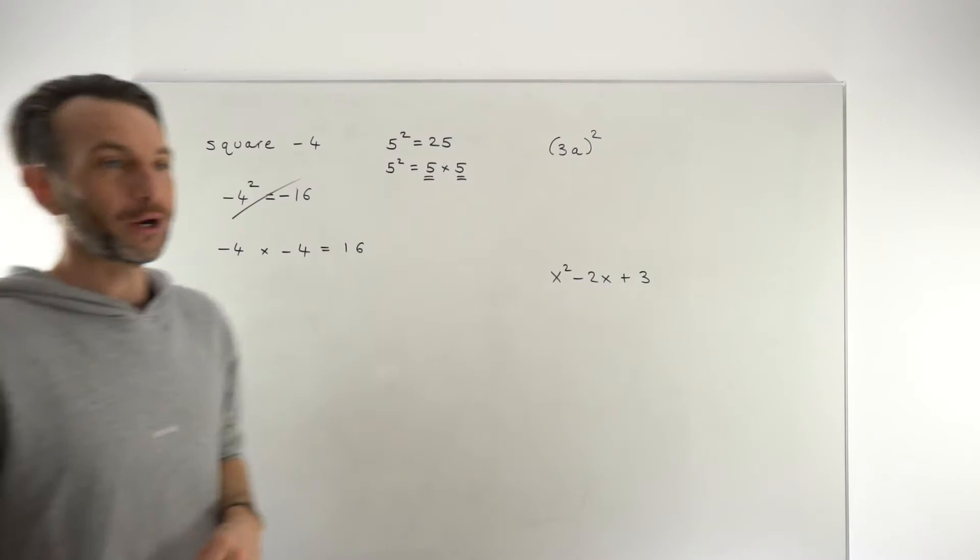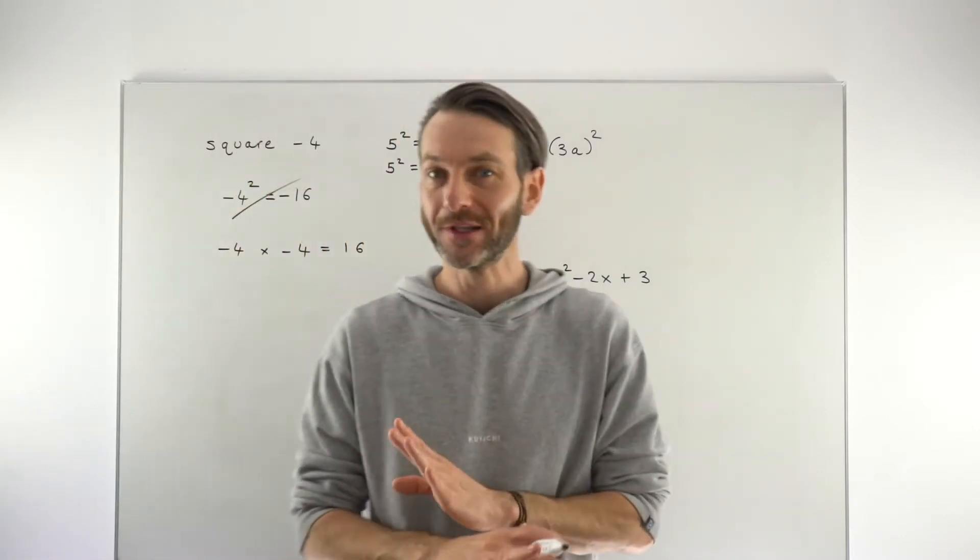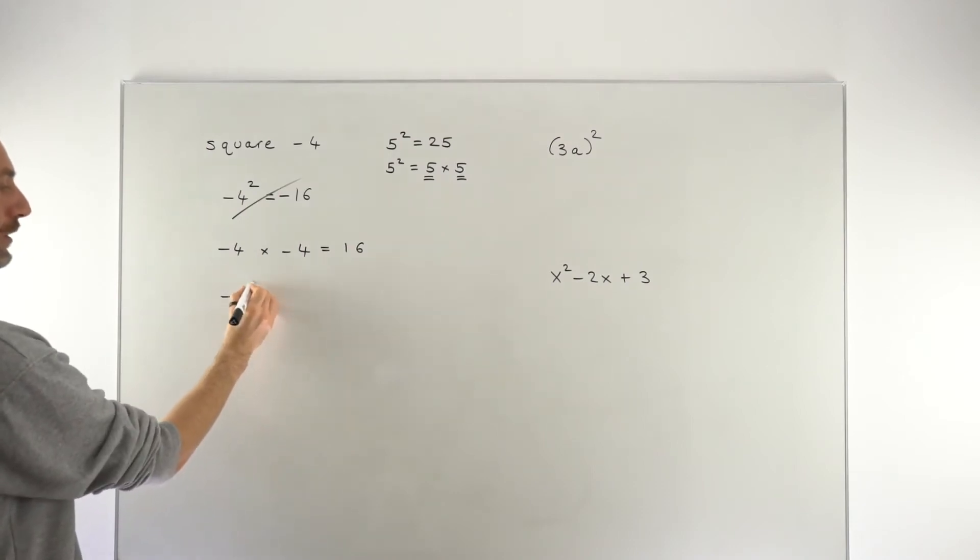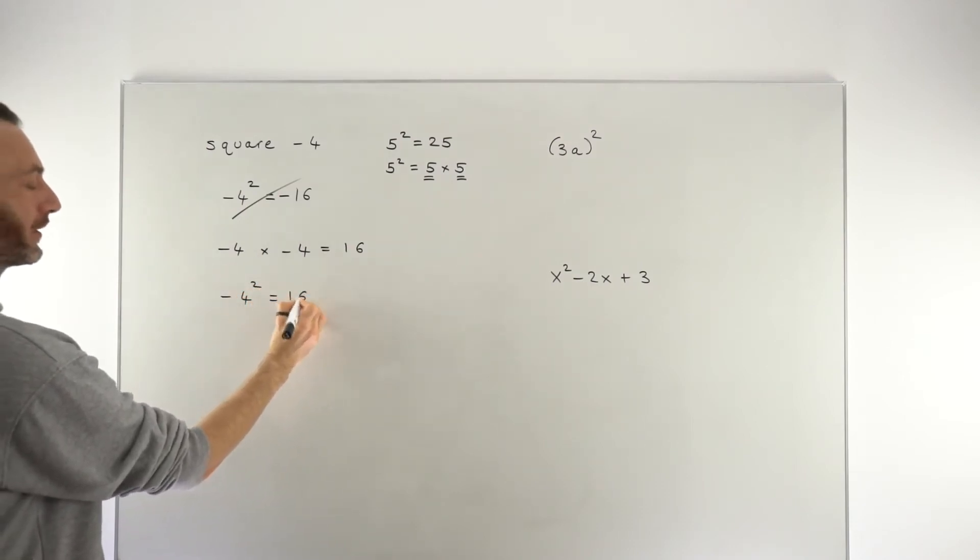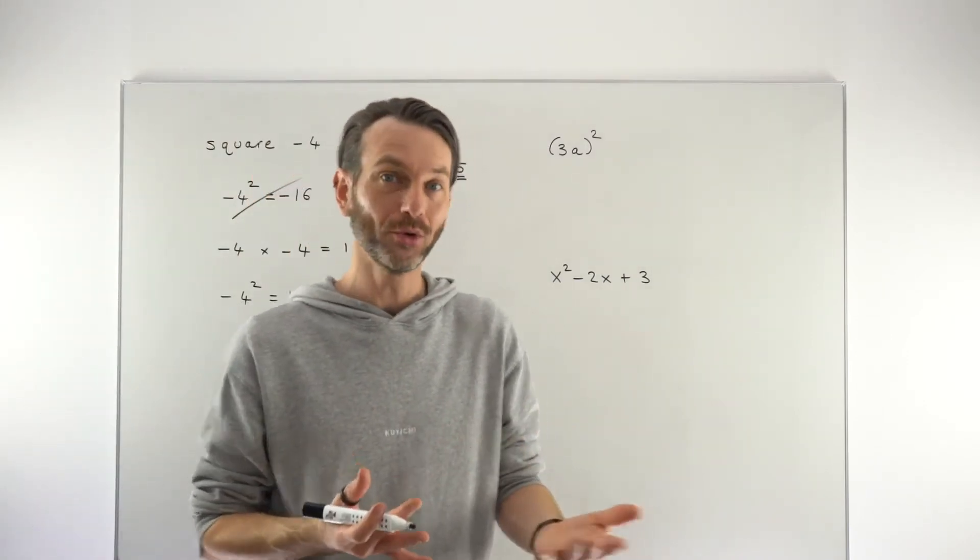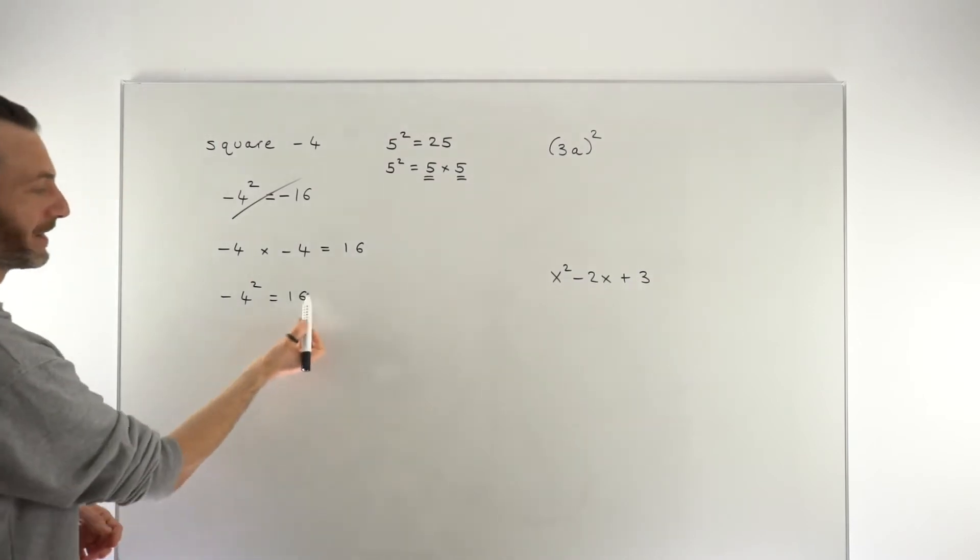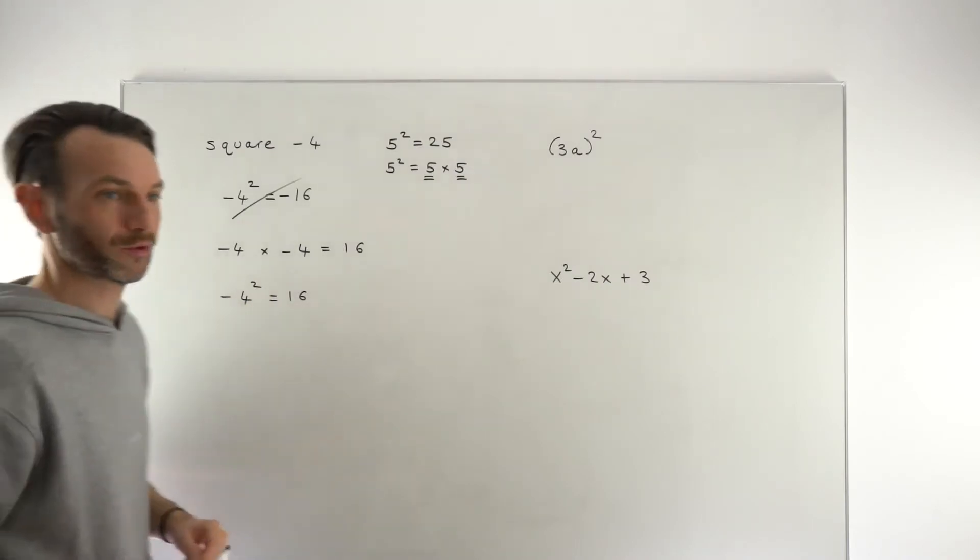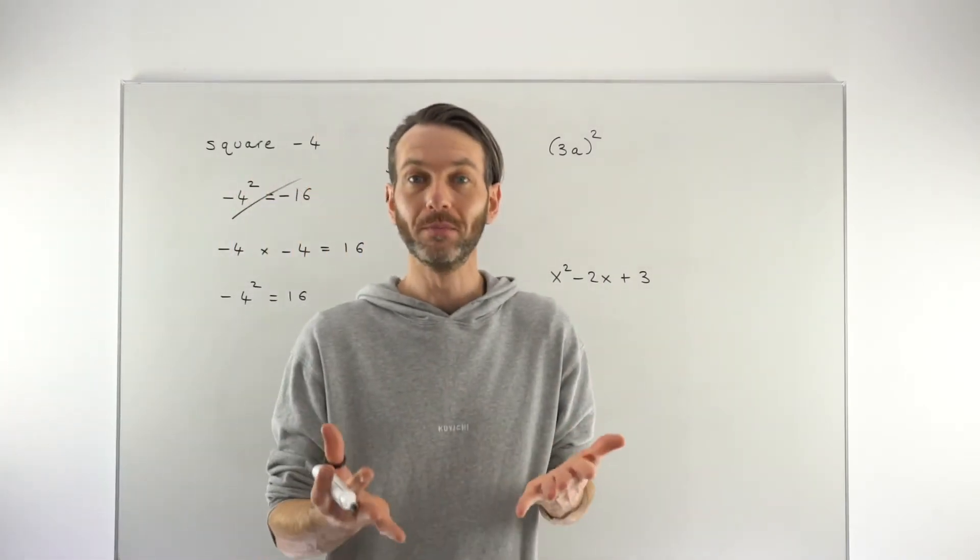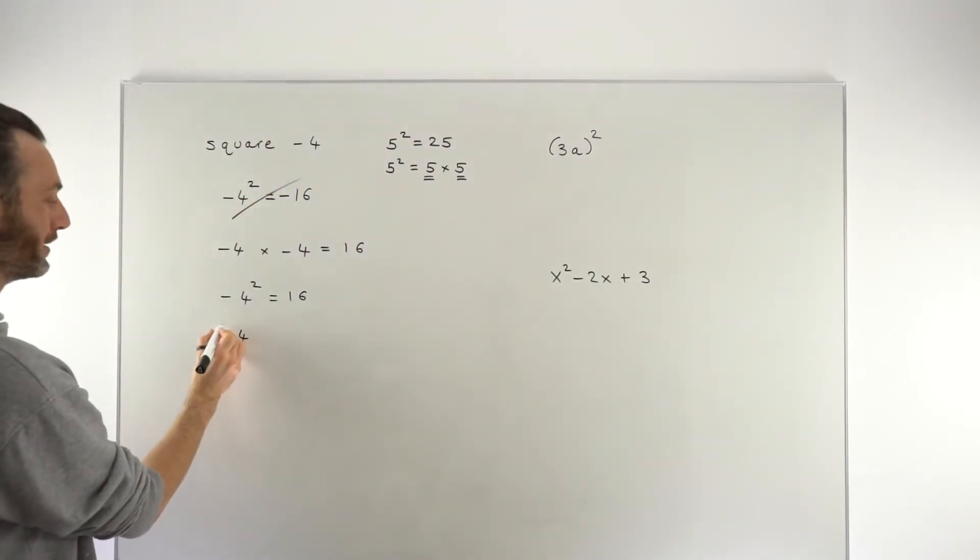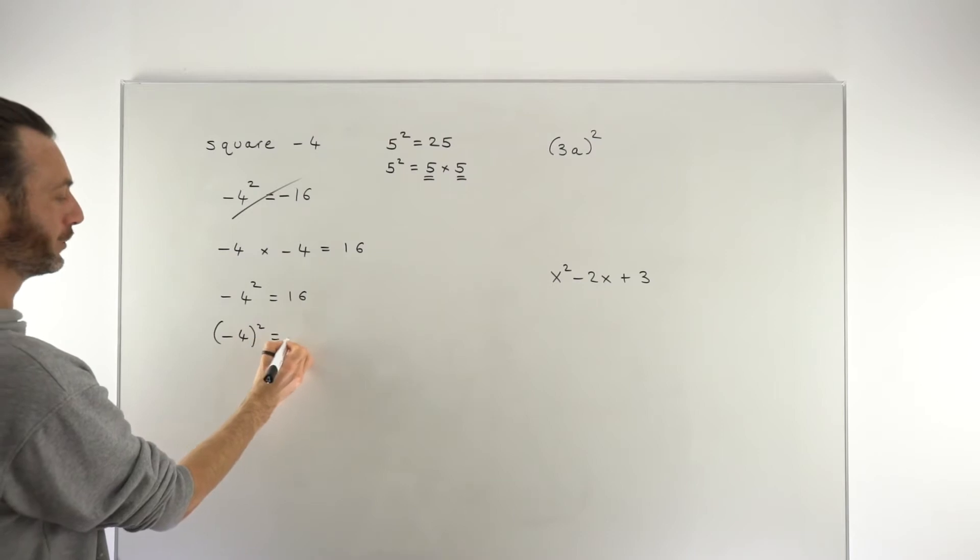So be really careful with that. Students make that mistake all of the time. Or another thing that they will commonly do is to write down minus 4 squared, but still present the final answer as positive 16, because they might remember that when you square a negative, you get a positive. But this is unlikely to get the marks either, because these two things are not equal. The answer to this should be minus 16, but the question was to square minus 4, which should be minus 4 all squared, and it should be written like this: minus 4 in a bracket squared equals 16.